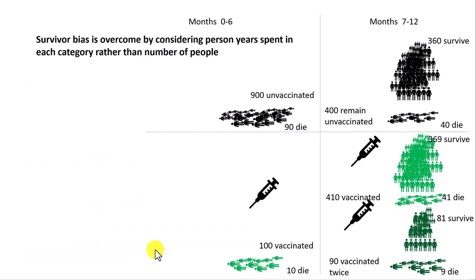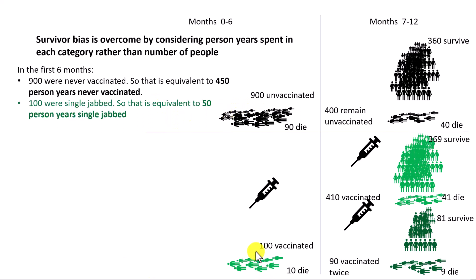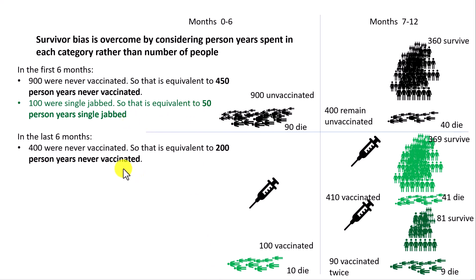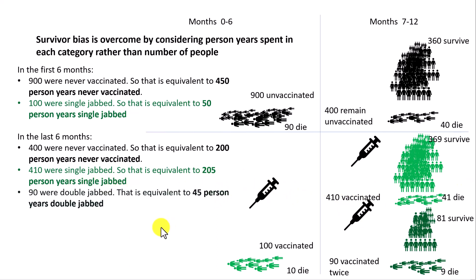How do we get round it? We get round it by considering person-years spent in each category rather than number of people. In the first six months, 900 were unvaccinated — that's equivalent to 450 person-years never vaccinated, because it was only six months (half a year). And 100 were single jabbed, which is equivalent to 50 person-years single jabbed. In the last six months, 400 were never vaccinated — equivalent to 200 person-years never vaccinated. 410 were single jabbed — equivalent to 205 person-years single jabbed. And 90 were double jabbed — that's equivalent to 45 person-years double jabbed.